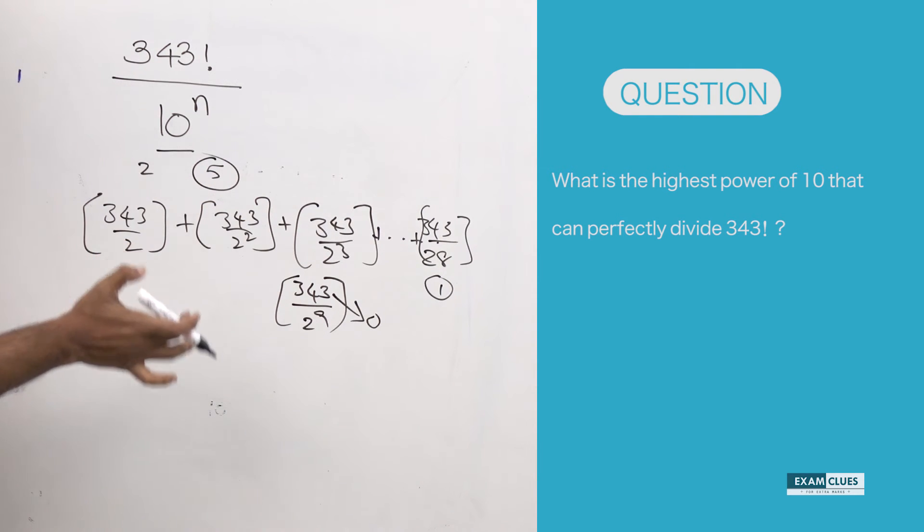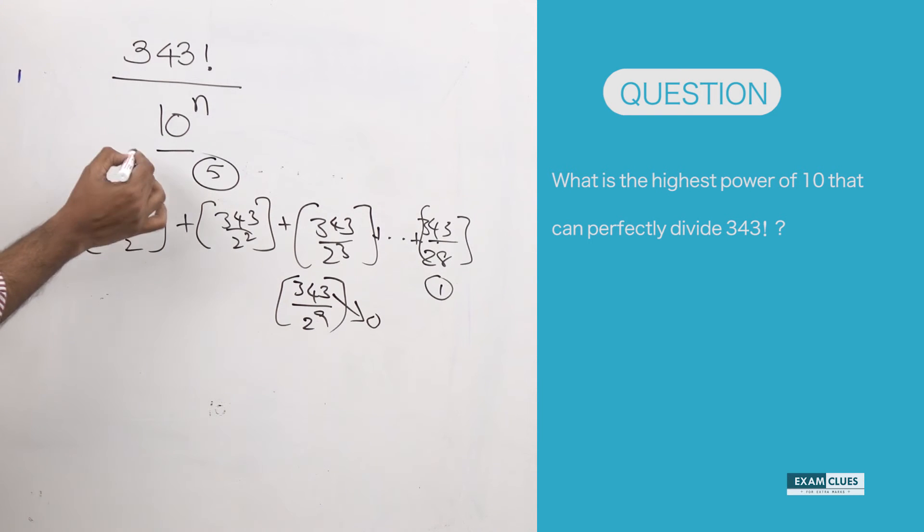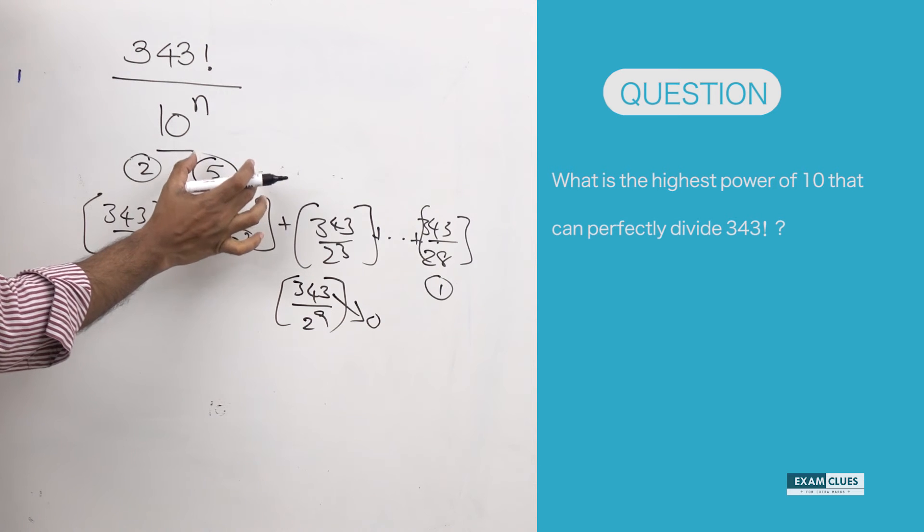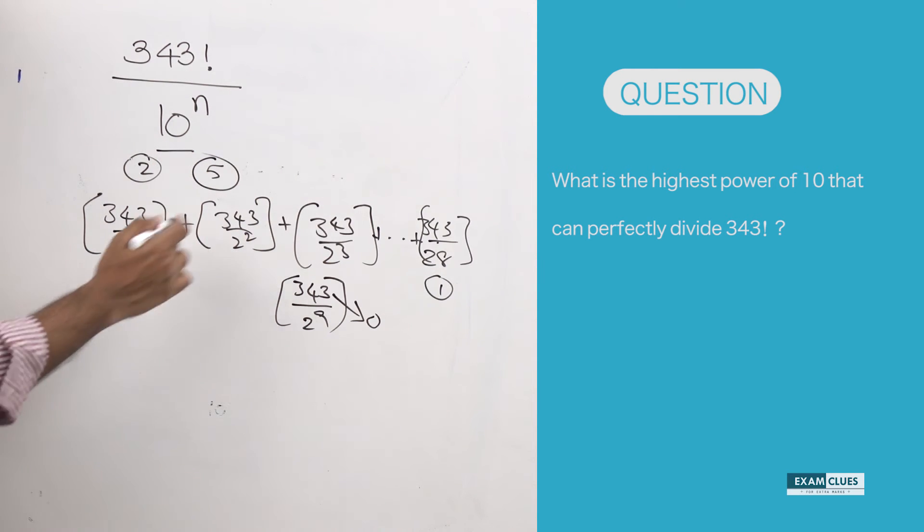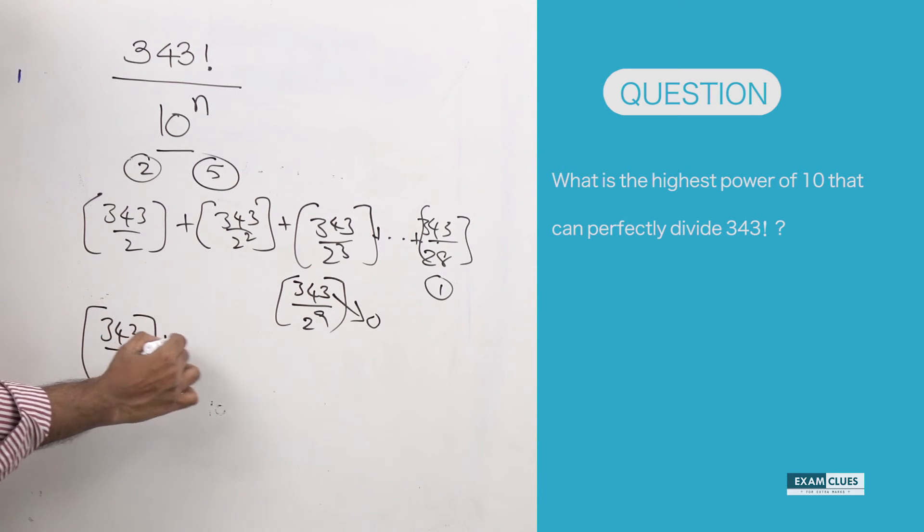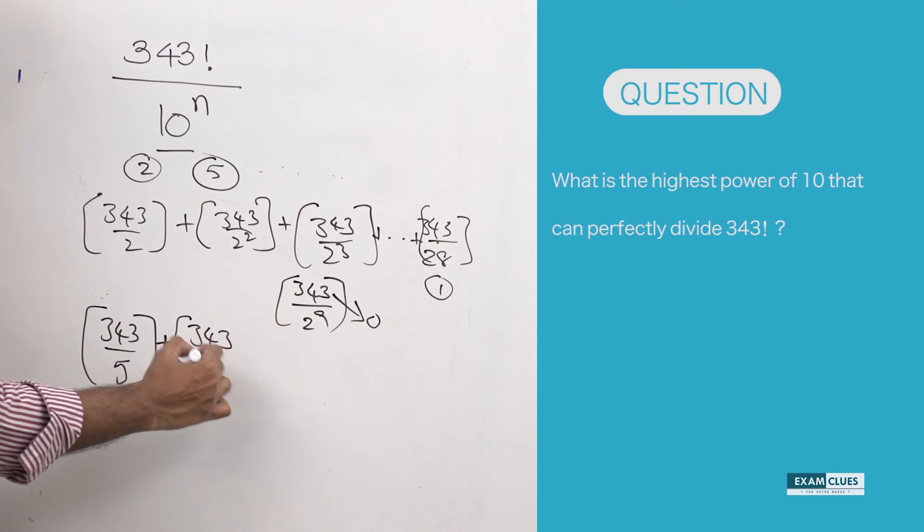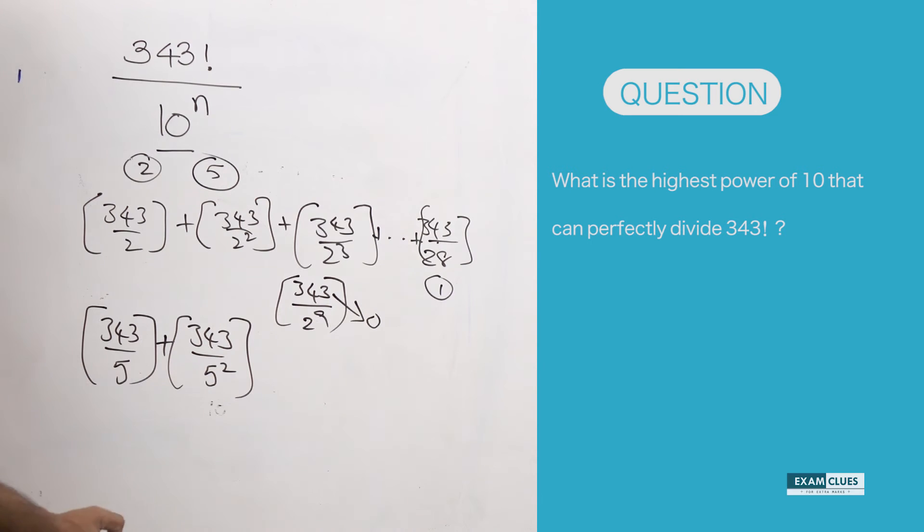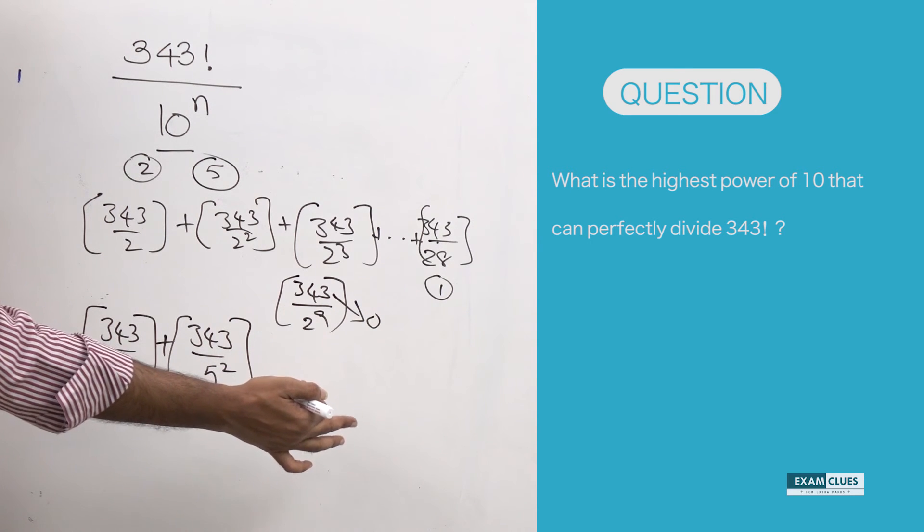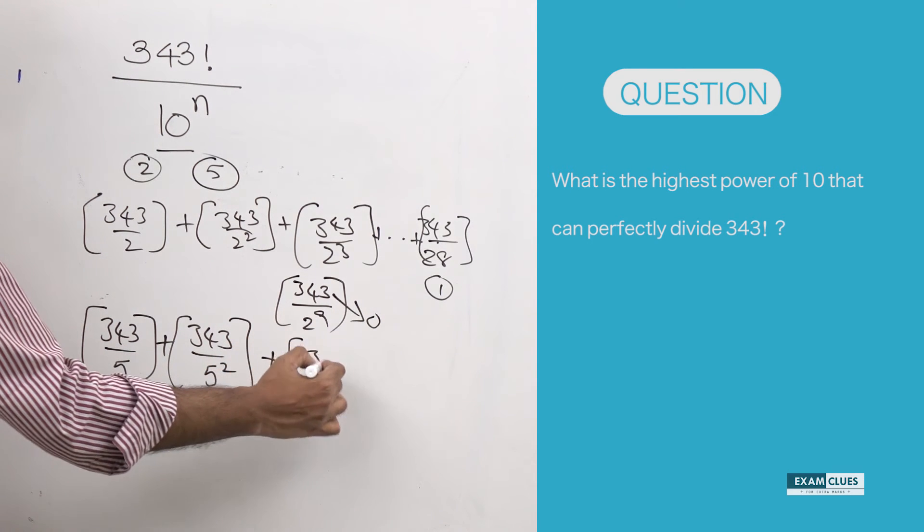So how many 5s are available? Let's write: 343 divided by 5, plus 343 divided by 5 squared—we keep increasing the power of 5—then 343 divided by 5 to the power 4. But anyway it's of no use because that yields 0, so we just need to stop where it's going to yield 0.